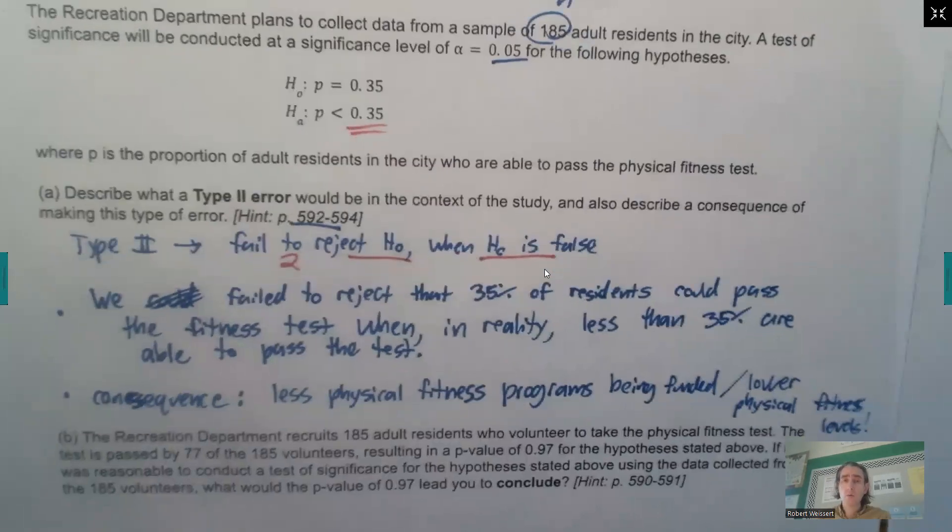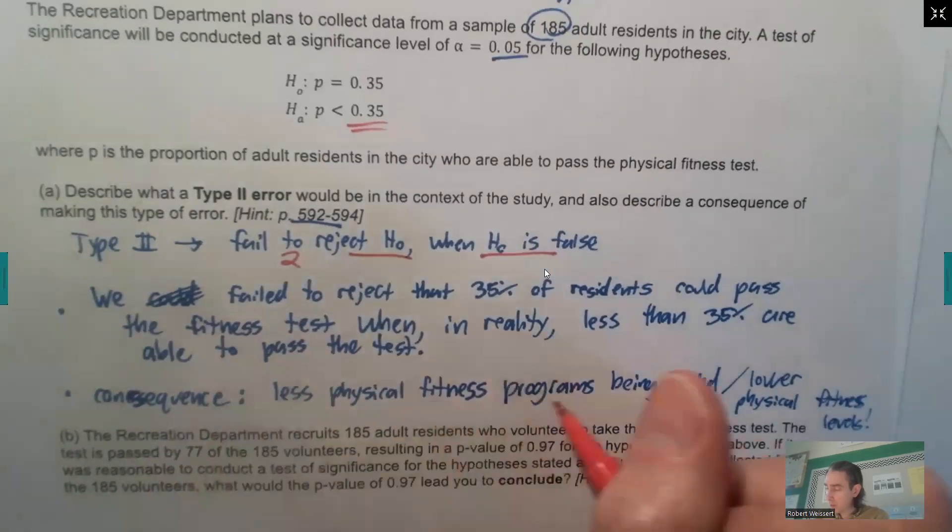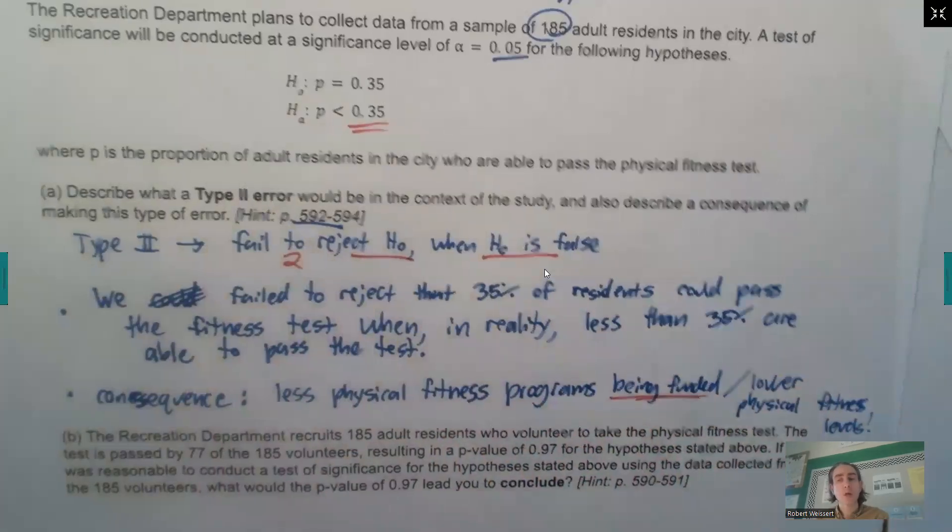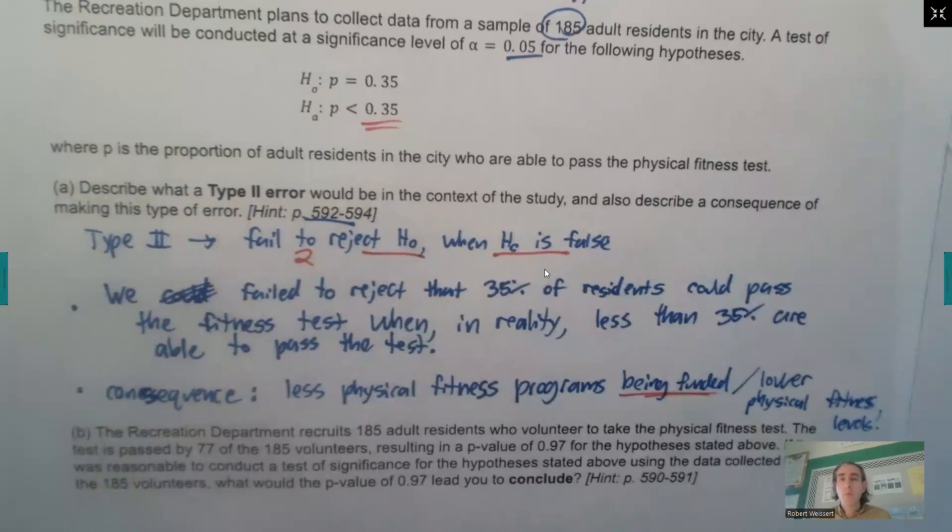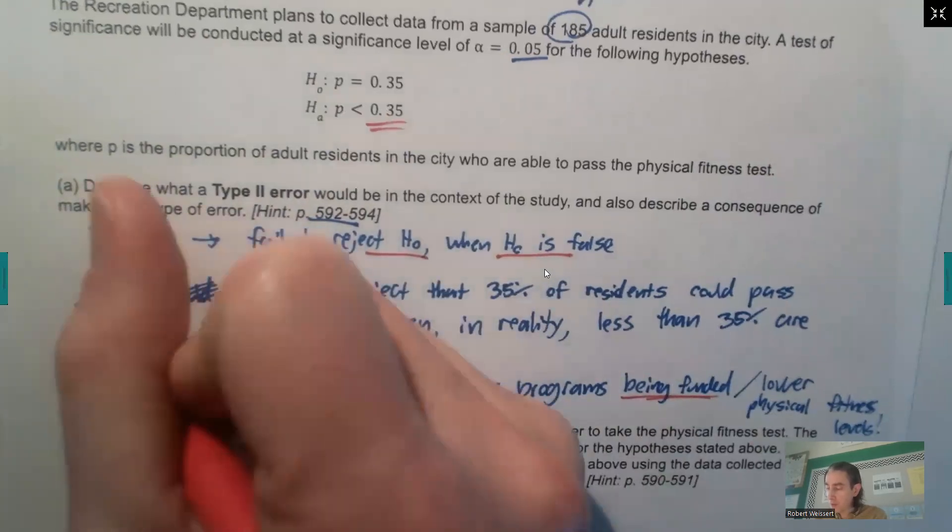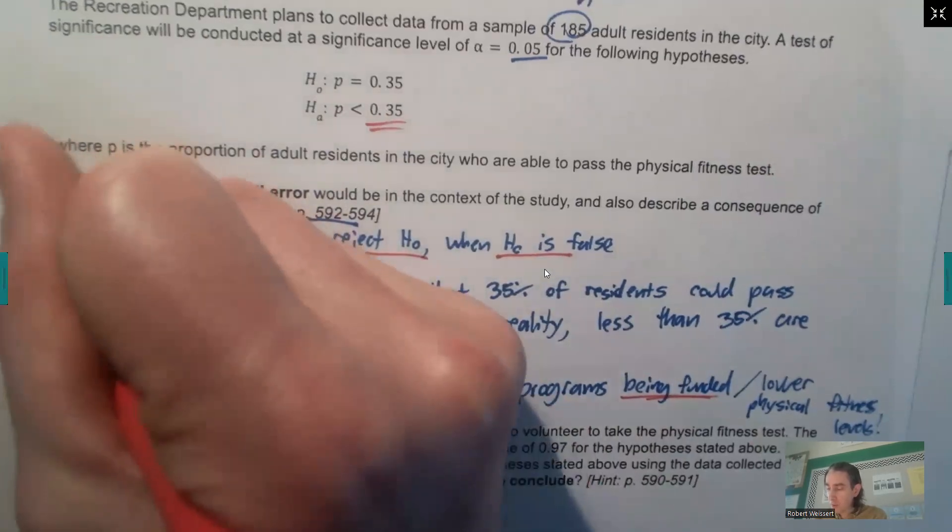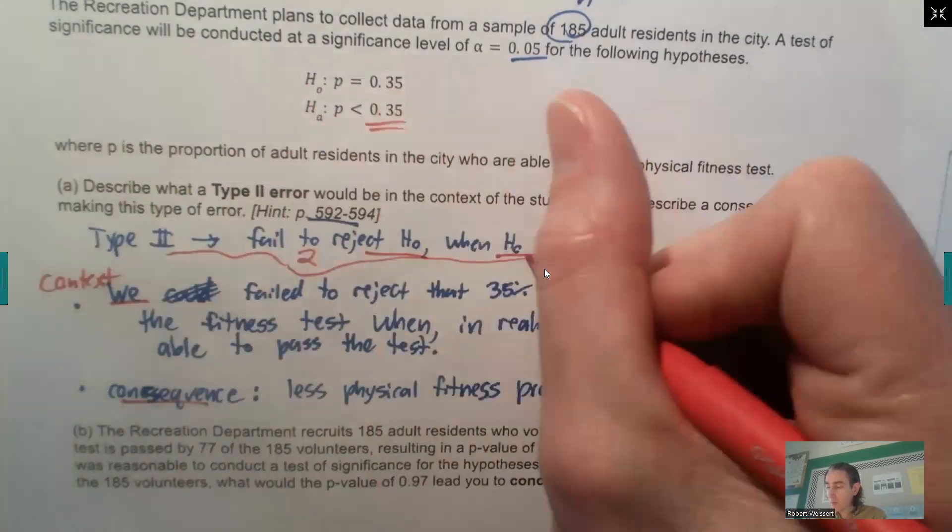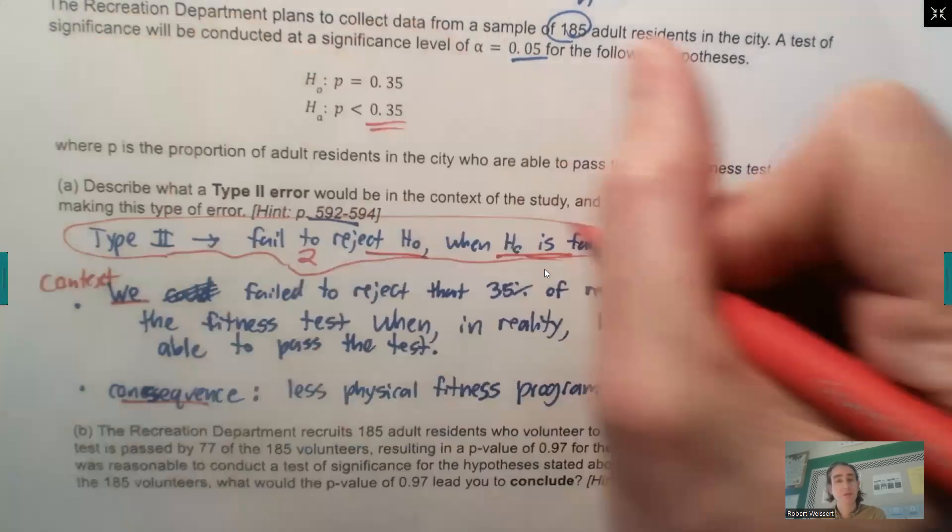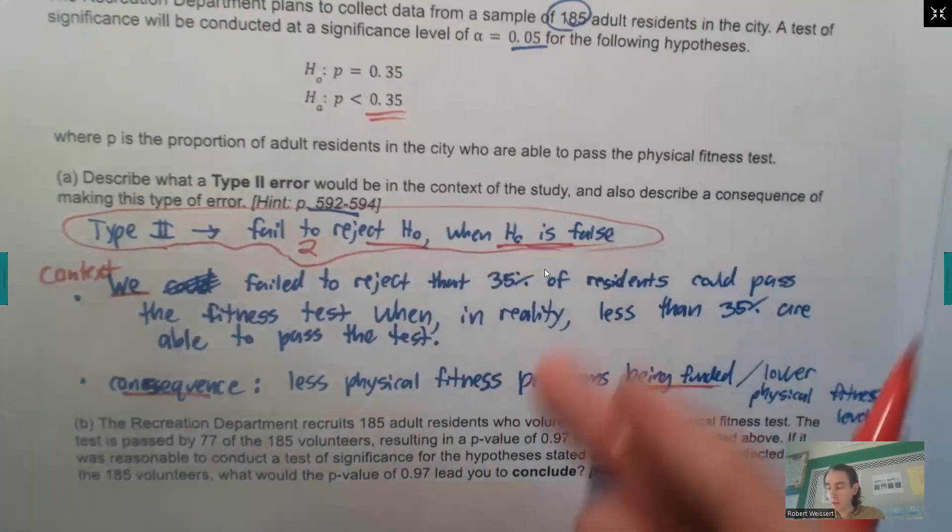Now the result of that is we could have less physical fitness programs as a consequence being funded by the city council, which could lead to lower physical fitness levels. That's just one example, but that would be how we could describe a consequence in the context of this problem. So there's your consequence, here's the context for the problem, and this is just the general definition of what a type 2 error is, which you don't have to write as long as you describe it in the context of the problem, but it doesn't hurt to write that up.